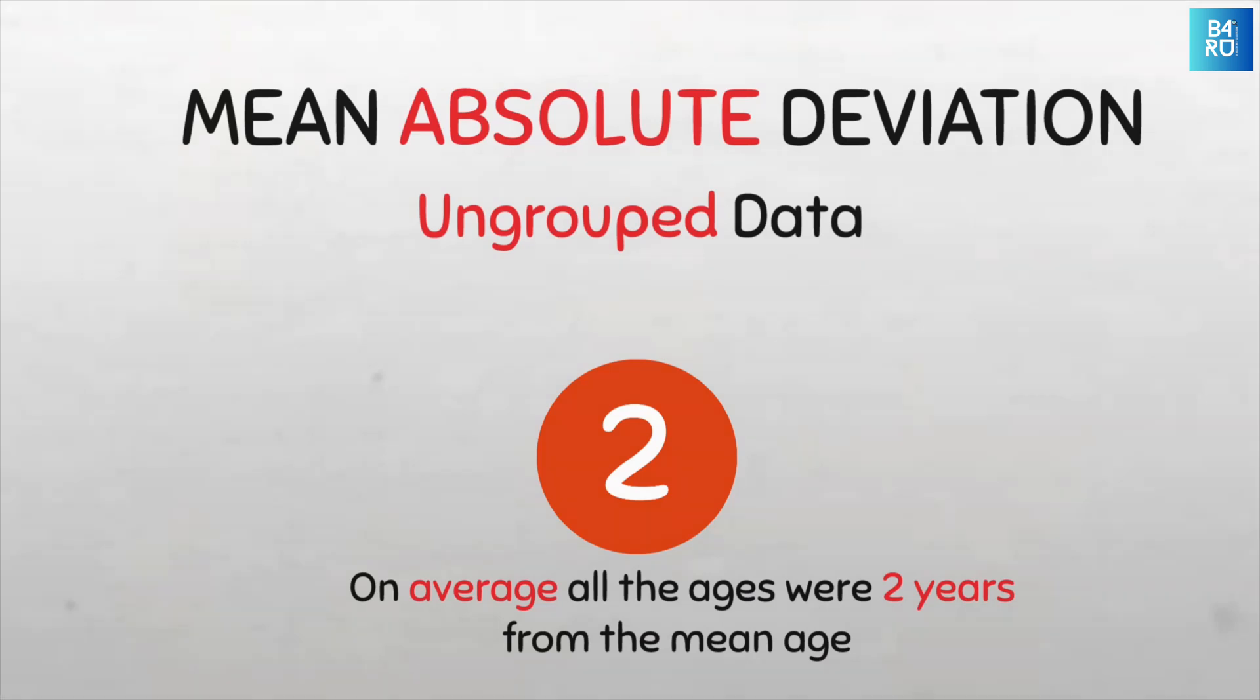Easy peasy. So this is how to compute the mean absolute deviation for ungrouped data with individual series. Now if you want to learn how to calculate the mean absolute deviation for group data with discrete series, check out this video popping up now. And for group data with continuous series, check out this other video. And don't forget to like, share and subscribe for more easy statistical stuff. And as always, thanks for watching.